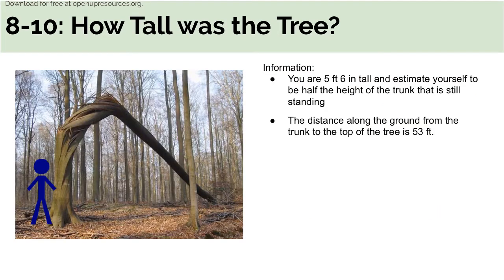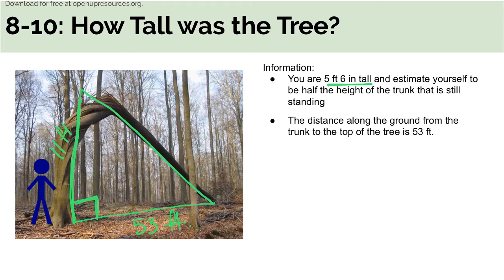Here's a problem not in your book — go ahead and draw these out on another sheet of paper. It's called 'How tall was the tree?' You are 5 feet 6 inches tall and estimate yourself to be half the height of the trunk still standing, so the trunk is 11 feet tall. The distance along the ground from the trunk to the top of the fallen tree is 53 feet. Since a tree trunk and the ground form a right angle, you have a right triangle forming here. Use the Pythagorean theorem to figure out the hypotenuse.